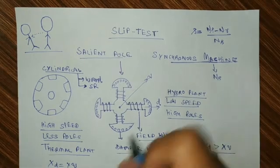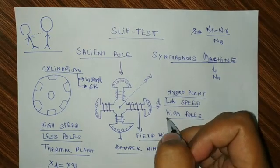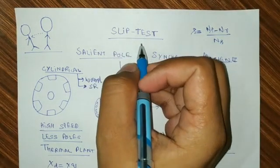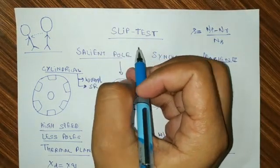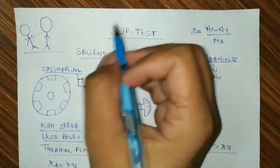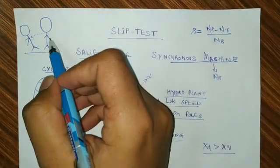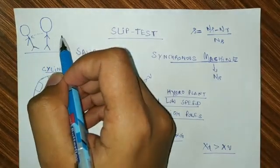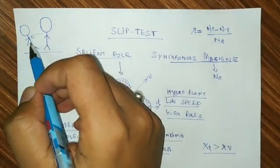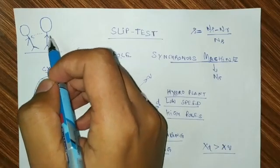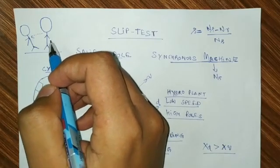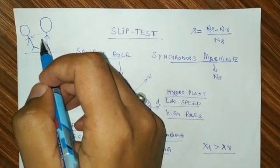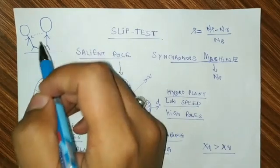Hello. In this discussion, we are going to learn about the slip test. So basically what is slip test? First of all, we will get to know what is slip. Suppose a person who is moving with his normal speed suddenly gets slip — whatever speed he was moving, that speed is slip — means he slipped because of a change in that normal speed.